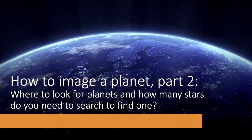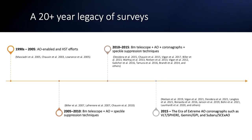Now I've been showing the properties of detected planets. How did we find them? Where did we look? How many stars needed to be surveyed? Starting before the last Protostars and Planets review, we now have a 20-plus year legacy of surveys. We started with just doing adaptive optics surveys, eventually adding speckle suppression and post-processing techniques in the late 2000s and 2010s, then adding coronagraphy. Since 2015, we've been in the era of extreme adaptive optics coronagraphs like VLT SPHERE, Gemini GPI, and Subaru SCExAO — and this is when we started detecting significant numbers of young planets.